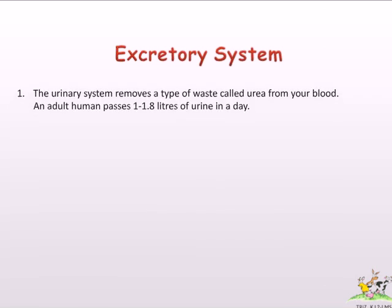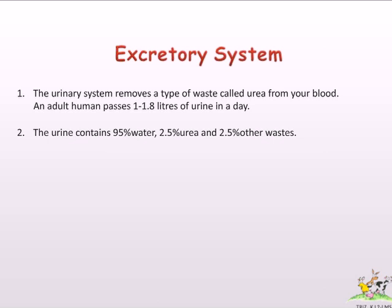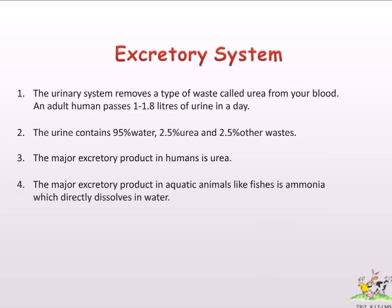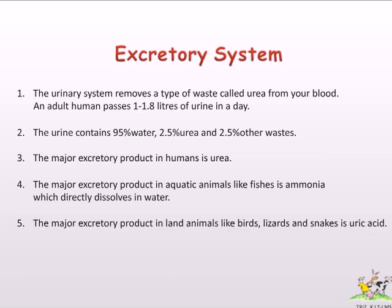The urinary system removes a type of waste called urea from your blood. An adult human passes 1 to 1.8 liters of urine per day. Urine contains 95% water, 2.5% urea, and 2.5% other wastes. The major excretory product in humans is urea. In aquatic animals like fishes, it is ammonia, which directly dissolves in water. In land animals like birds, lizards, and snakes, it is uric acid.